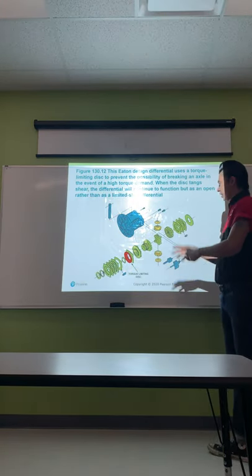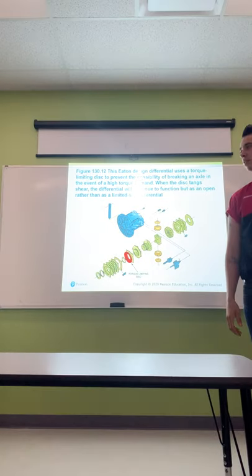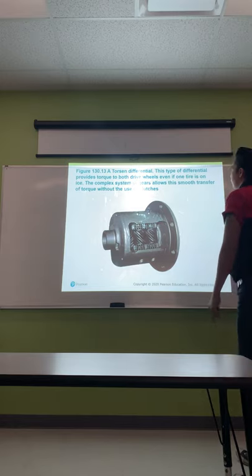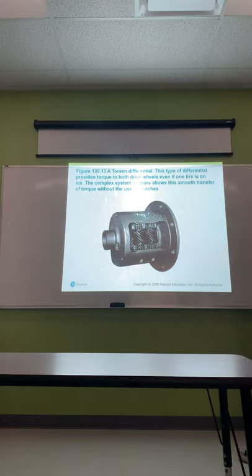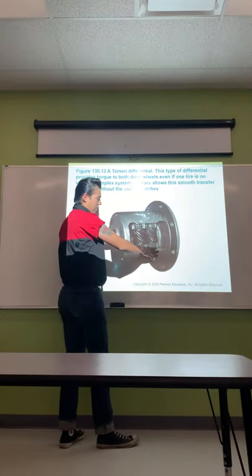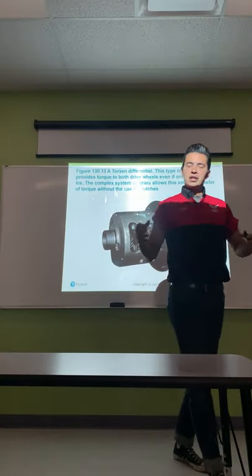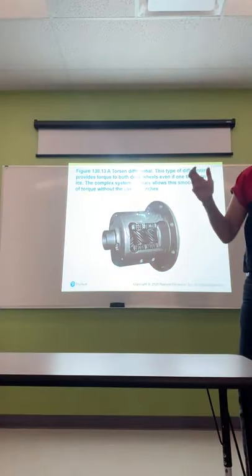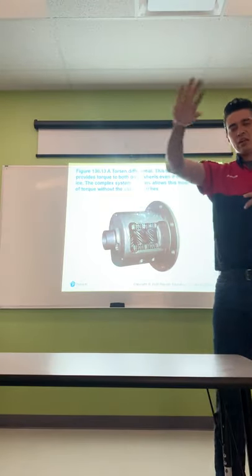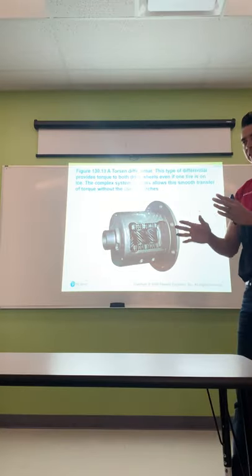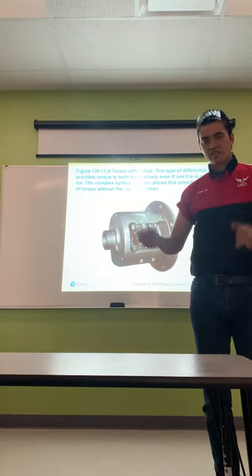After the tangs break, you can still drive the vehicle but you won't have positraction. You'd have to take it all apart and replace all those clutch packs. A torsion differential provides torque to both drive wheels even if one tire has less traction. The complex system of gears allows smooth transfer of torque without the use of clutches — allowing different speeds in turns but sending power to both wheels when traction is needed.